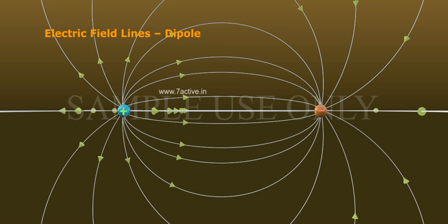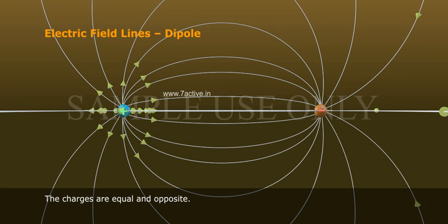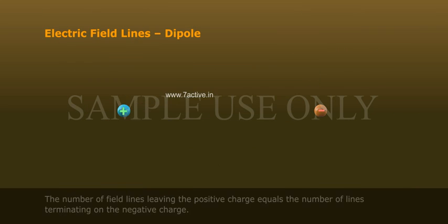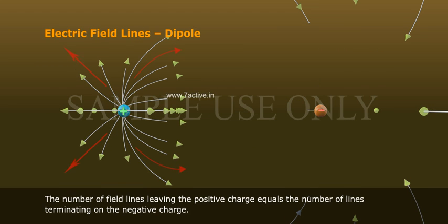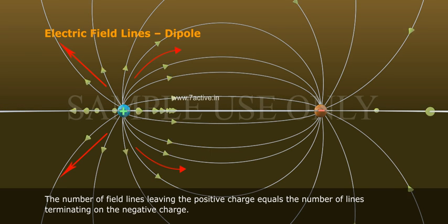Electric Field Lines — Dipole. The charges are equal and opposite. The number of field lines leaving the positive charge equals the number of lines terminating on the negative charge.